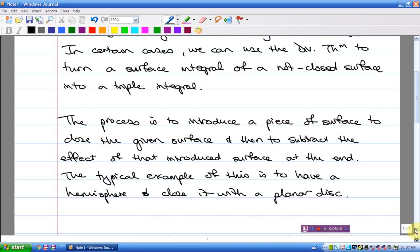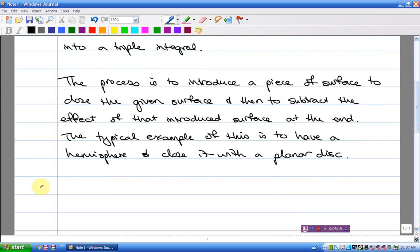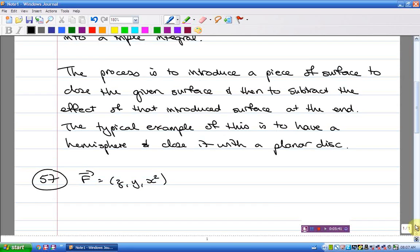In exercise 57, find the flux of F. Let's have a look, we've got F. And F is Z, Y, X squared. I can already see the div is going to be very simple indeed. Through the upper half of the sphere, upper half of the sphere, so a hemisphere. There it is. Radius one centered on the origin.